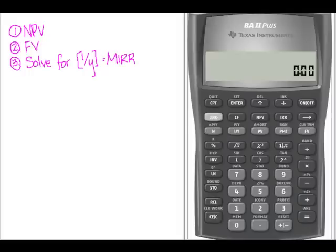I'm going to go through three steps: I'm going to calculate the net present value of the project, calculate the future value, and then when I solve for IY at the end, that's going to give me my modified internal rate of return.